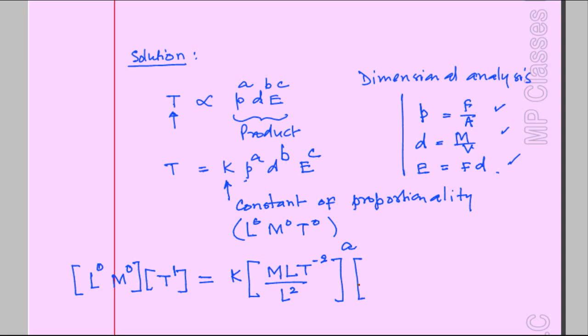I have density which is much easier, mass over volume. Volume is nothing but L cubed. In dimensional form, this is raised to B. Then I have energy which is force times distance. You already have the force M L T raised to minus 2 times distance is L, and that raised to C.